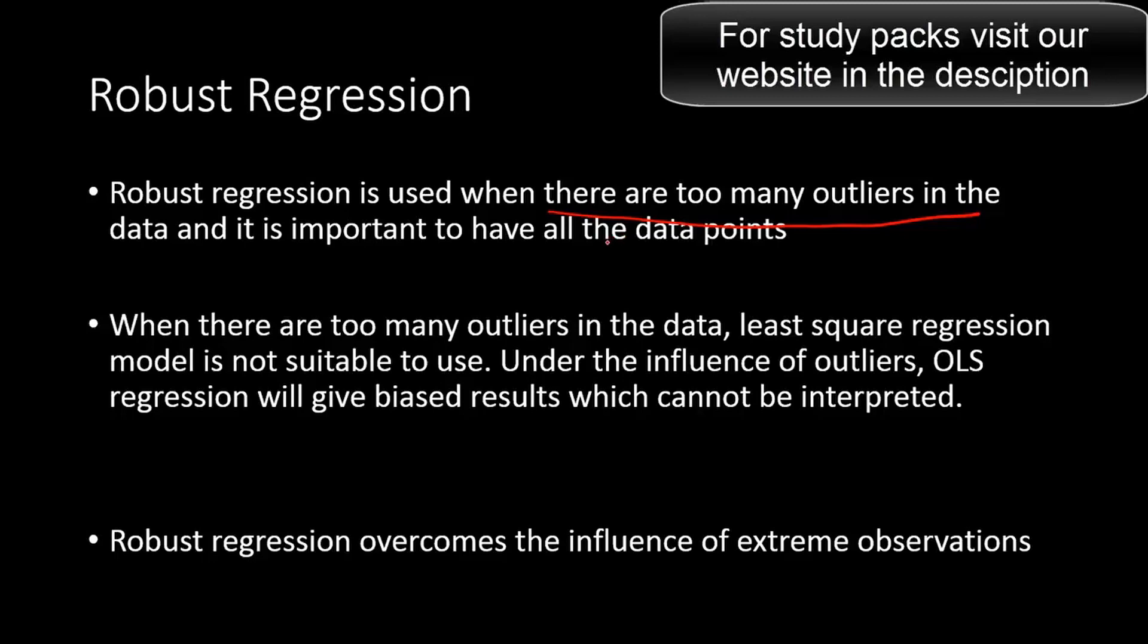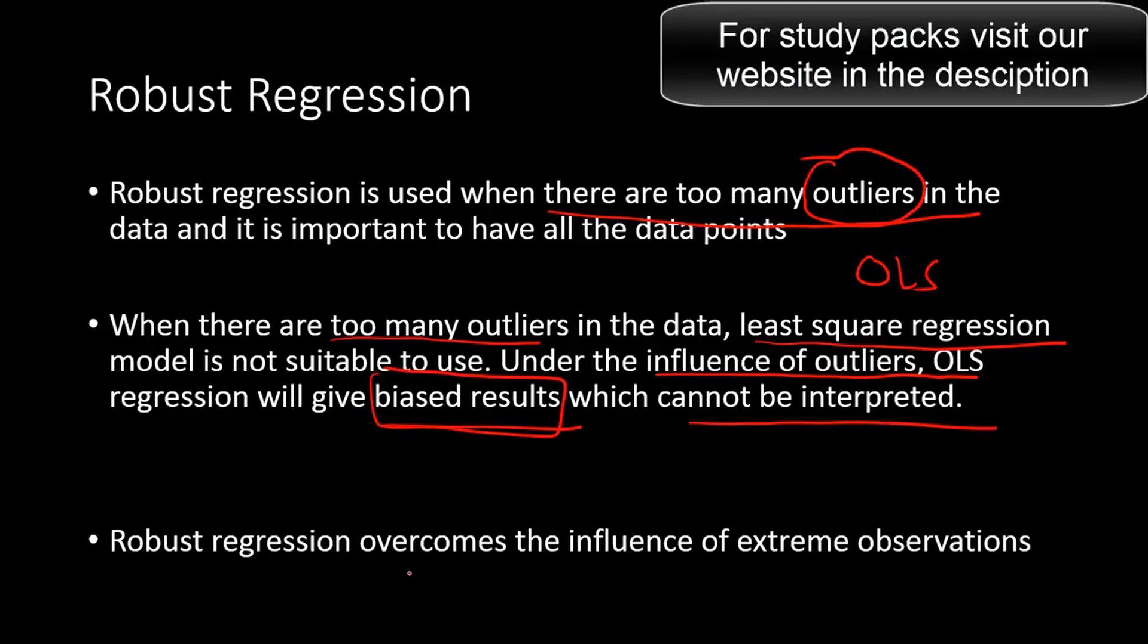Most statistical models will have problems when you have outliers in your data. Outliers are nothing but the extreme observations. Under the influence of outliers, ordinary least-square regression will give biased results. So that's one important point to remember. Robust regression overcomes this influence of extreme observations.